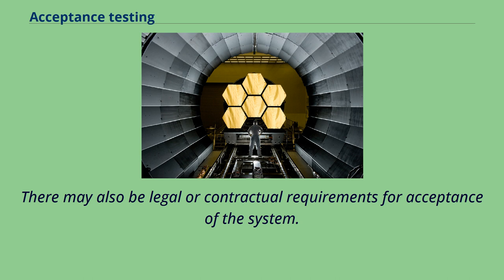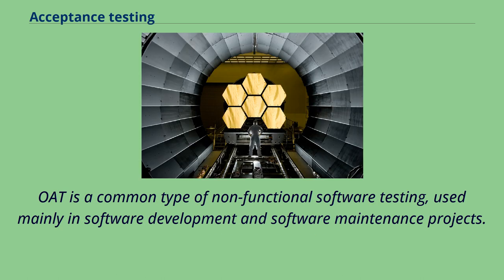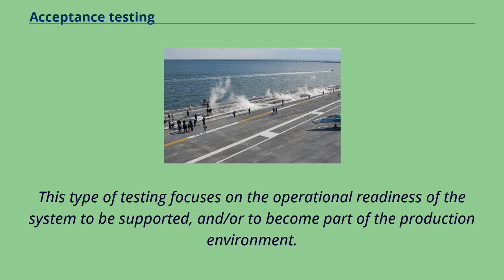Operational acceptance testing is used to conduct operational readiness of a product, service, or system as part of a quality management system. OAT is a common type of non-functional software testing, used mainly in software development and software maintenance projects. This type of testing focuses on the operational readiness of the system to be supported, in order to become part of the production environment.